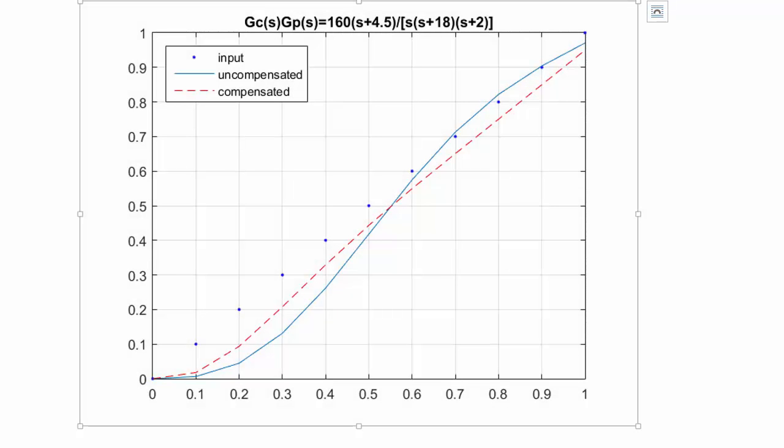Here is the MATLAB plot of the unit ramp response for the compensated and the uncompensated system. What you should see here is that the uncompensated system doesn't track the ramp very well. But the compensated system not only tracks the unit ramp input, but it has an error of 0.05, which would indicate that KV is equal to 20.